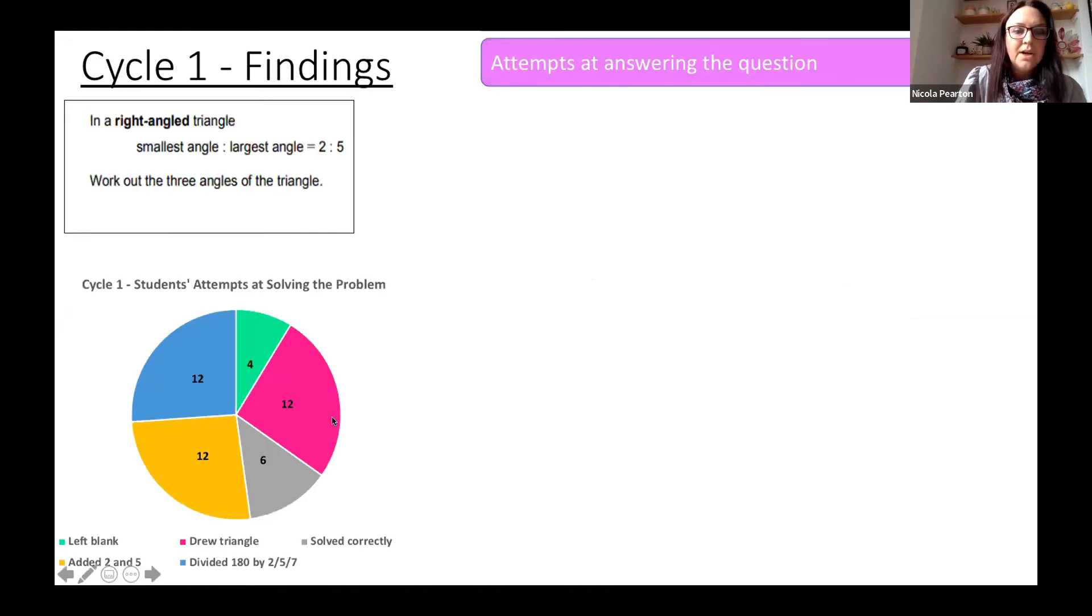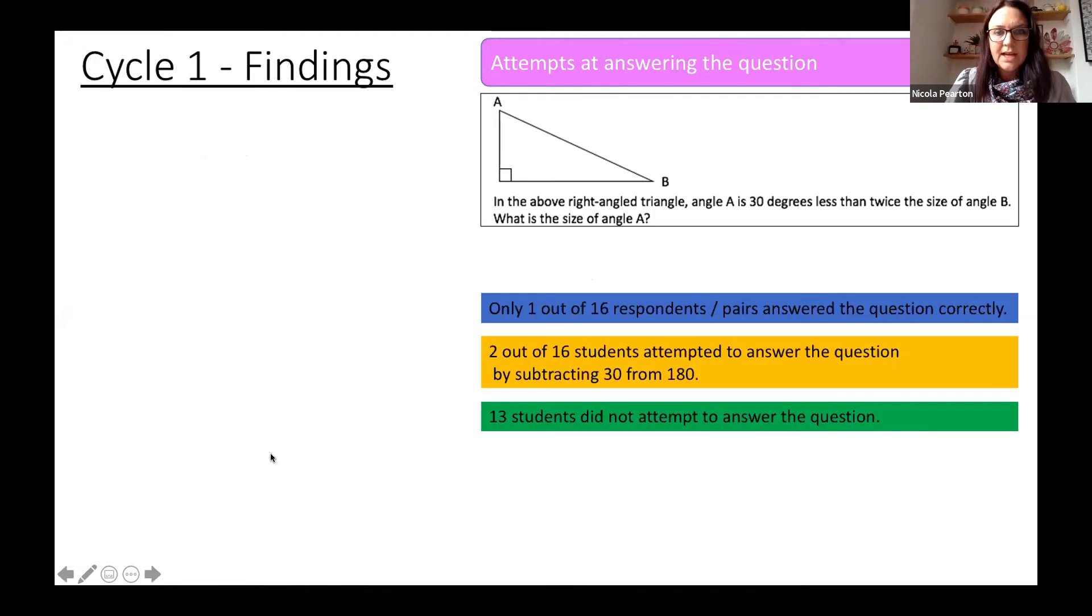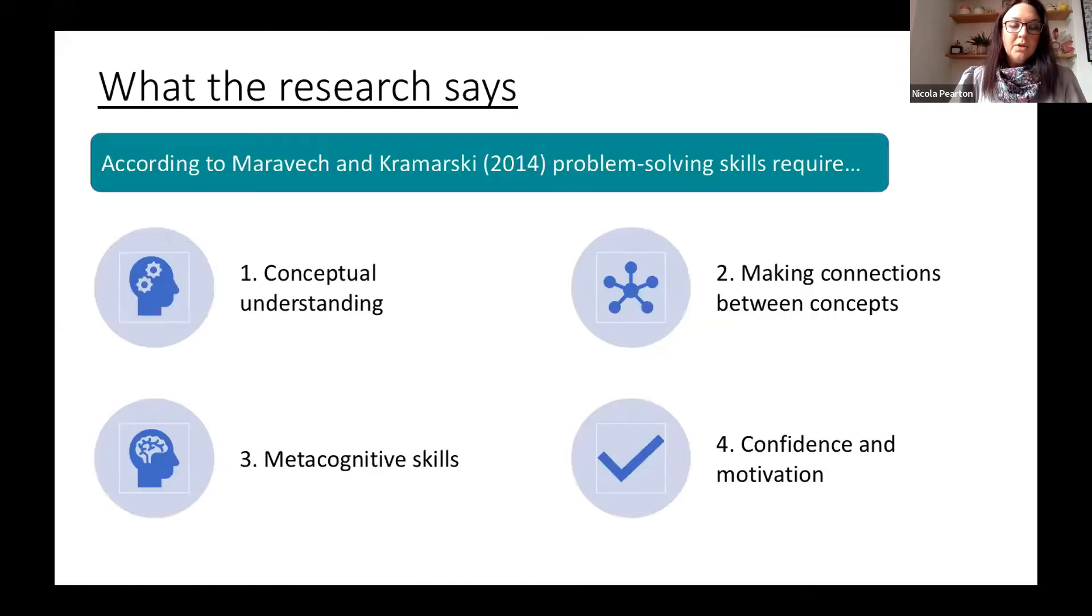We then looked at their attempt at answering the question. A few of them tried. Only six solved it correctly. The Brighton students—only one was able to answer it correctly. They really were stuck with the algebra—they hadn't got the forming and solving the equation.